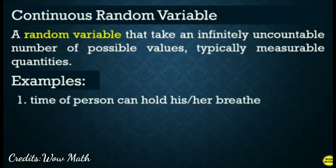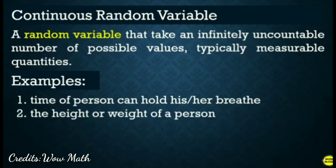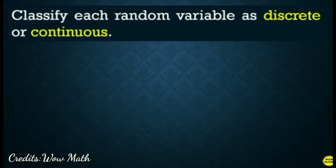Kadalasan, ito yung mga sinusukat, kinakount. Like for example, measured of weight, no? Measuring of weight, height, okay? O pagkuhan ng time, the distance, amount. So, yan ay halimbawa ng continuous random variable. It's about measurable quantities. So, kagaya nga dito, sa halimbawa natin, the time of person can hold his or her breath. The height or weight of a person. The body temperature.